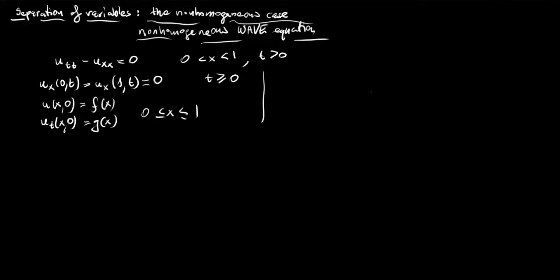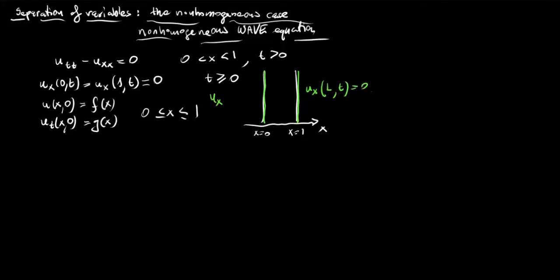So the situation on the x, t plane looked like this. Here is x equals 0, here is x equal to 1, here are our boundaries, here the value of the x-derivative of the function is equal to 0 as well as here. And the initial condition is given on the t equals 0 line: u of x is equal to a given function f of x and its time derivative is equal to a given function g of x. We are looking for a solution here.